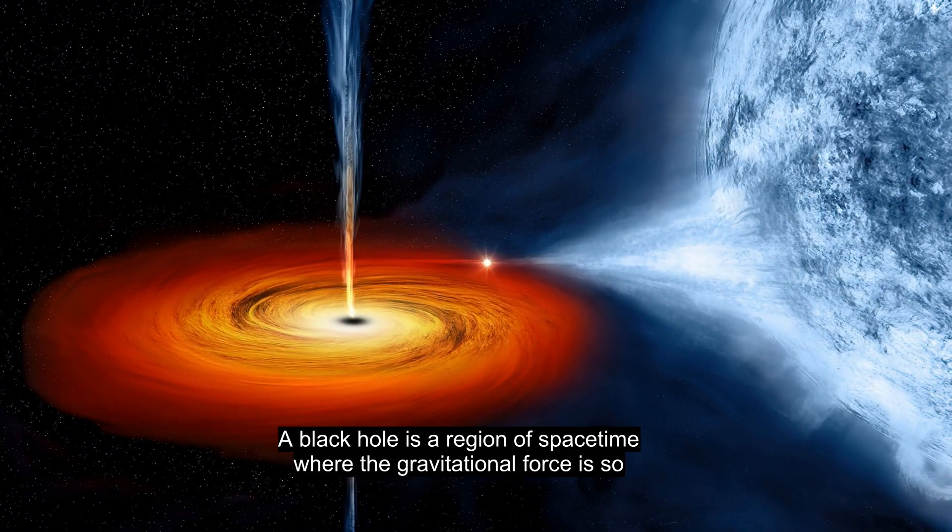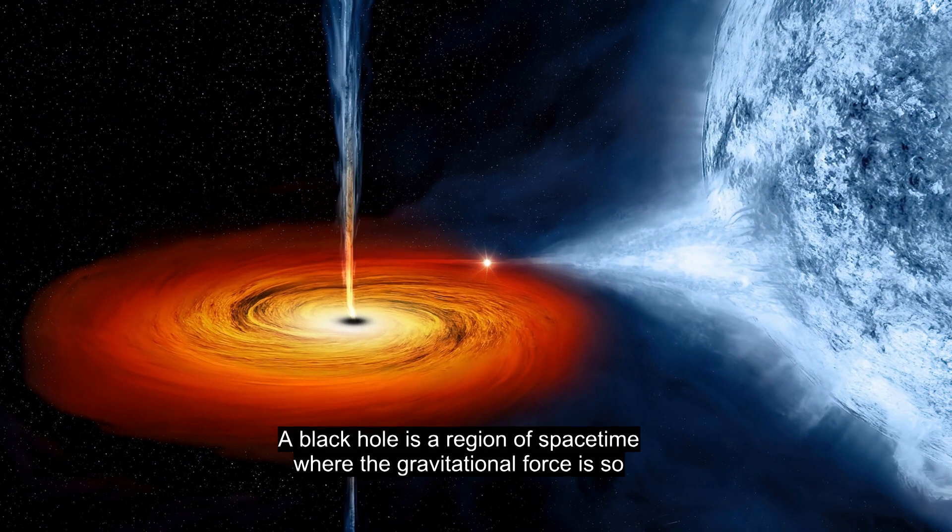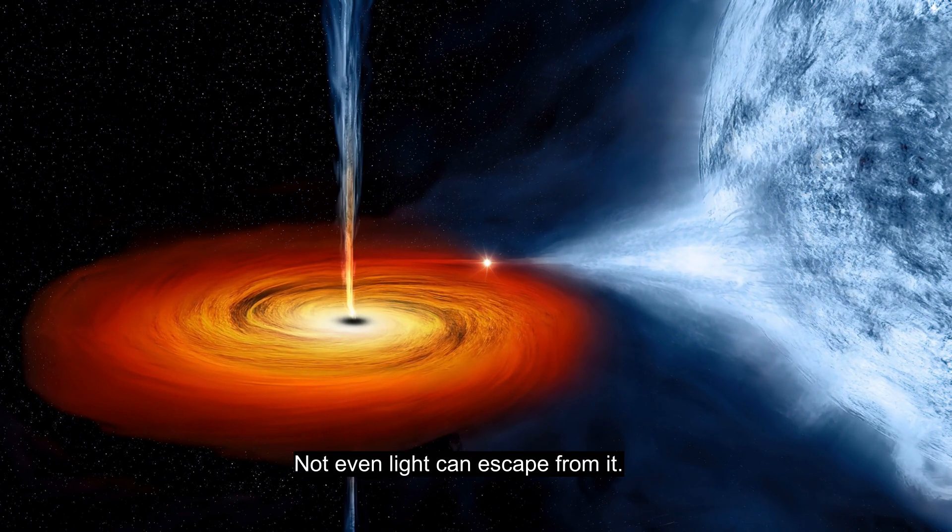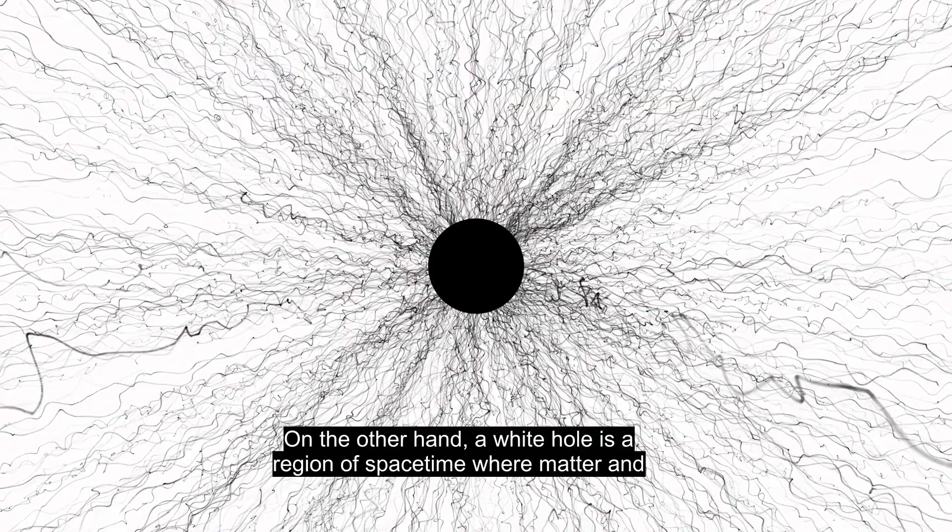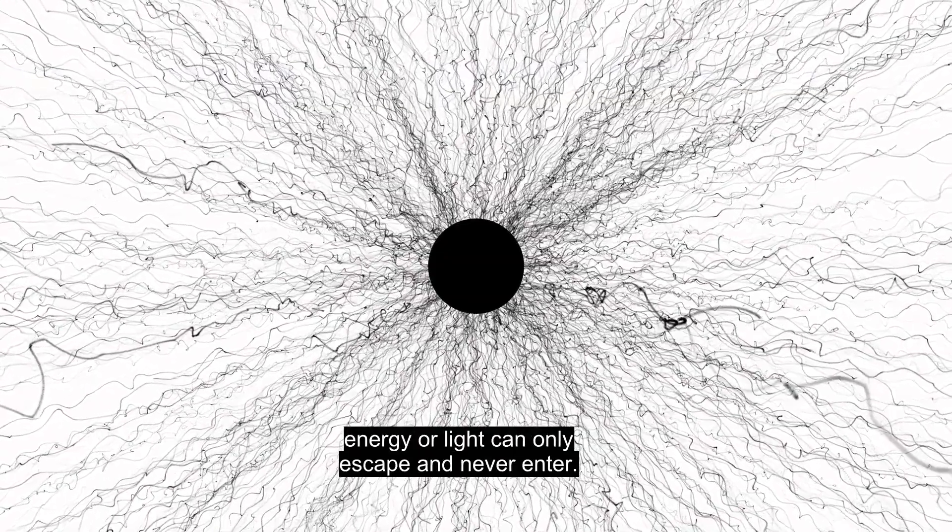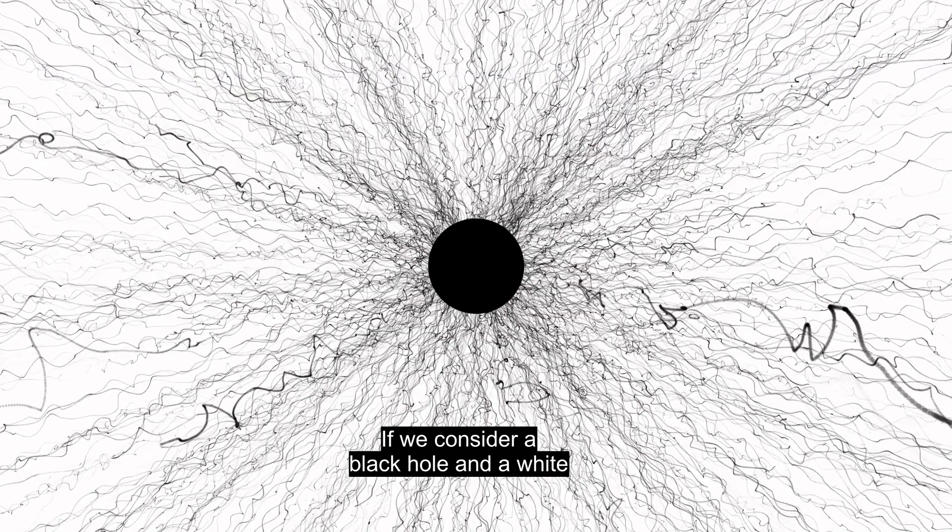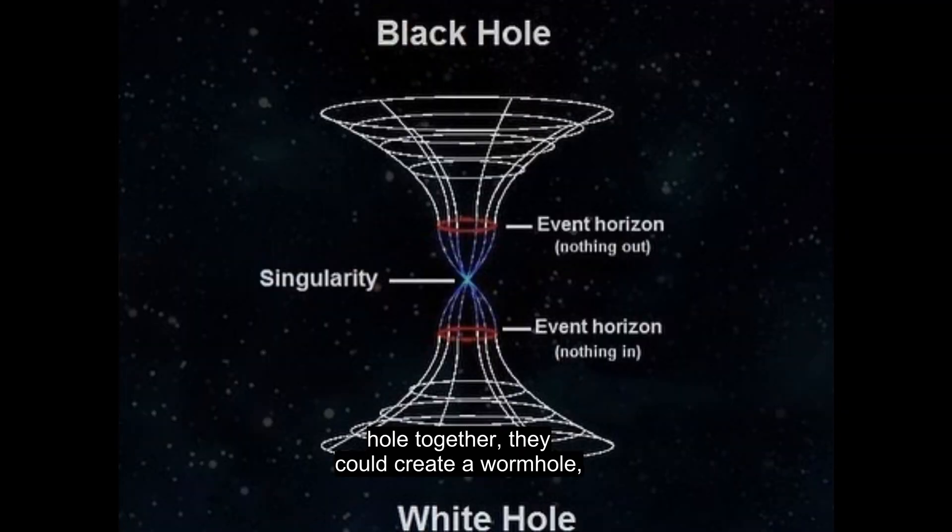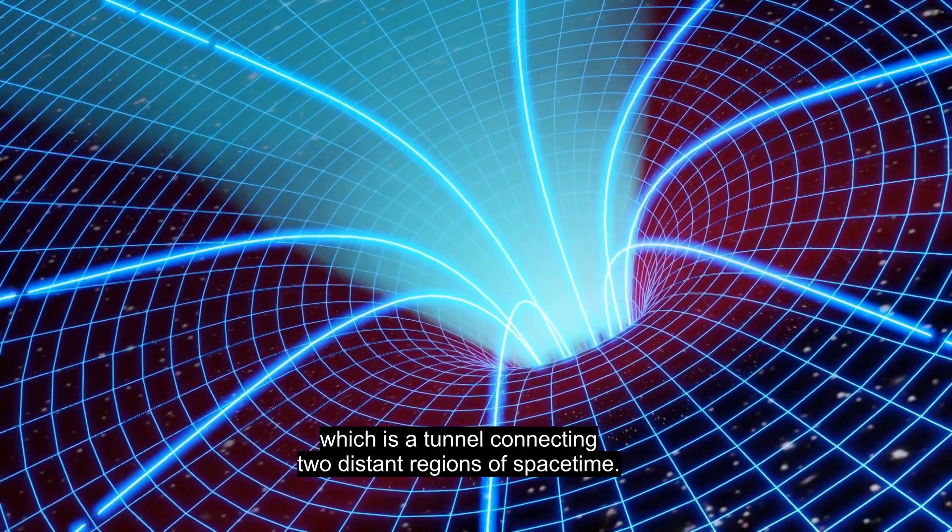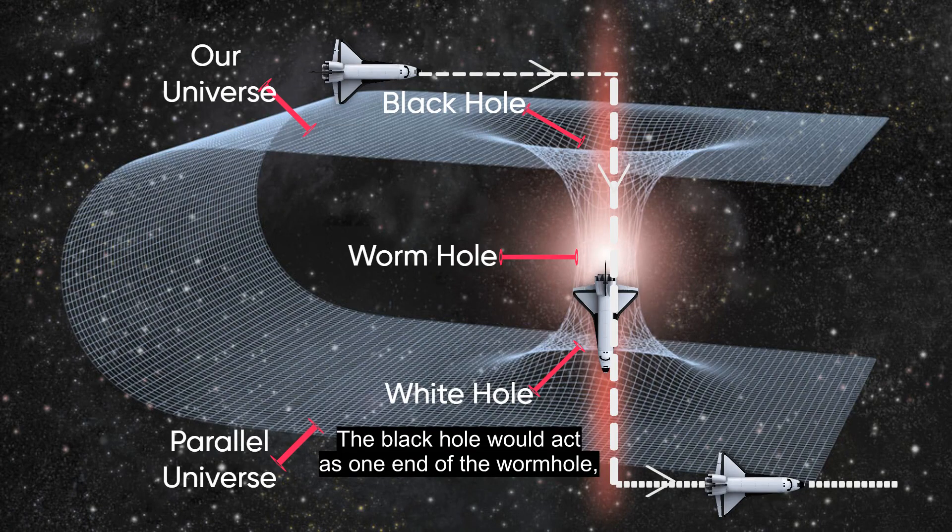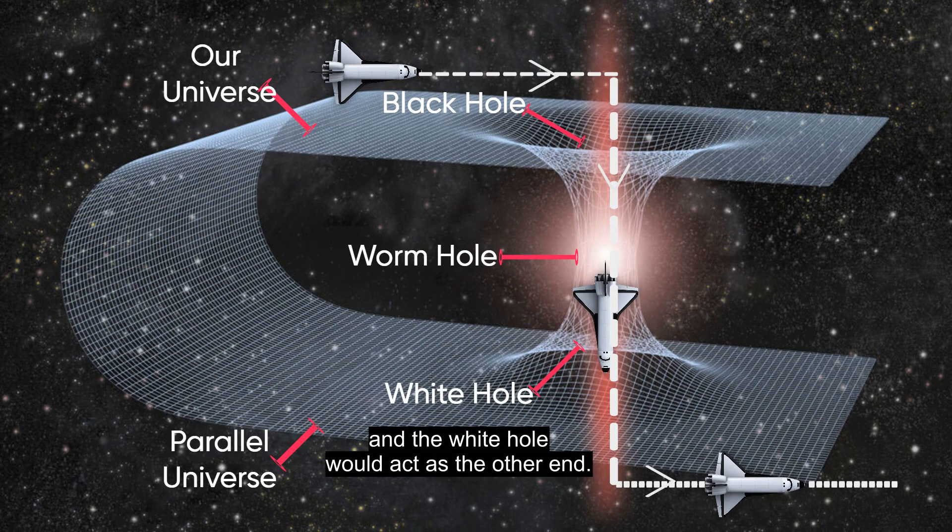A black hole is a region of spacetime where the gravitational force is so strong that nothing, not even light, can escape from it. On the other hand, a white hole is a region of spacetime where matter and energy or light can only escape and never enter. If we consider a black hole and a white hole together, they could create a wormhole, which is a tunnel connecting two distant regions of spacetime. The black hole would act as one end of the wormhole, and the white hole would act as the other end.